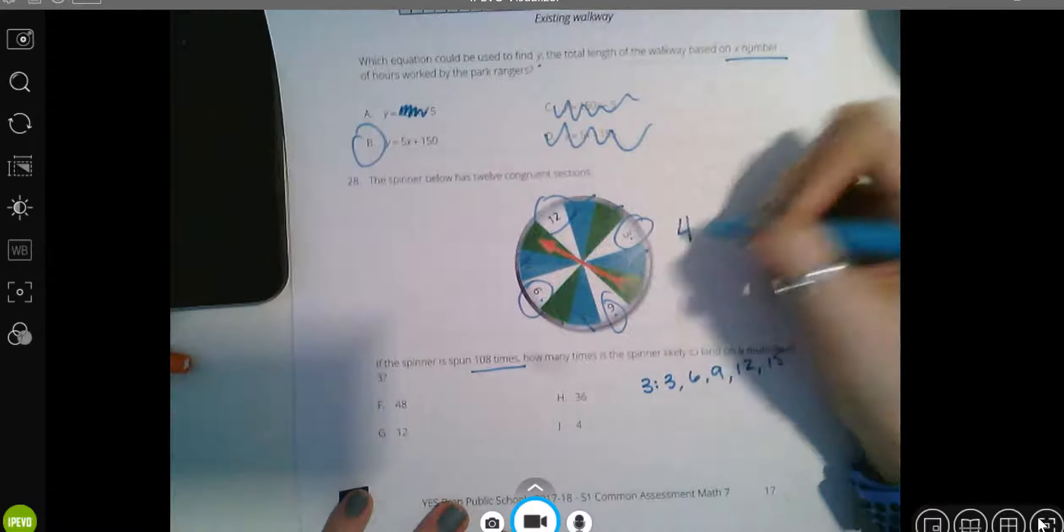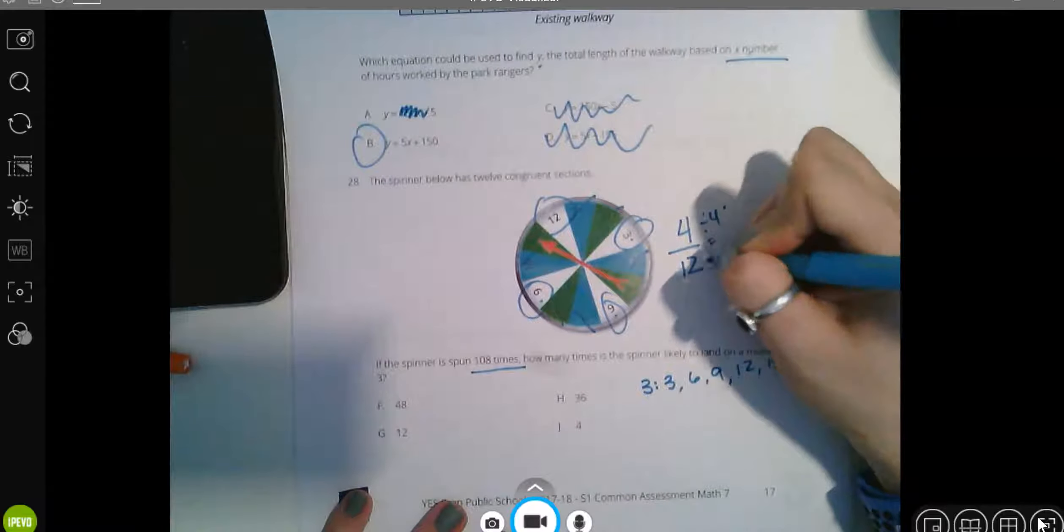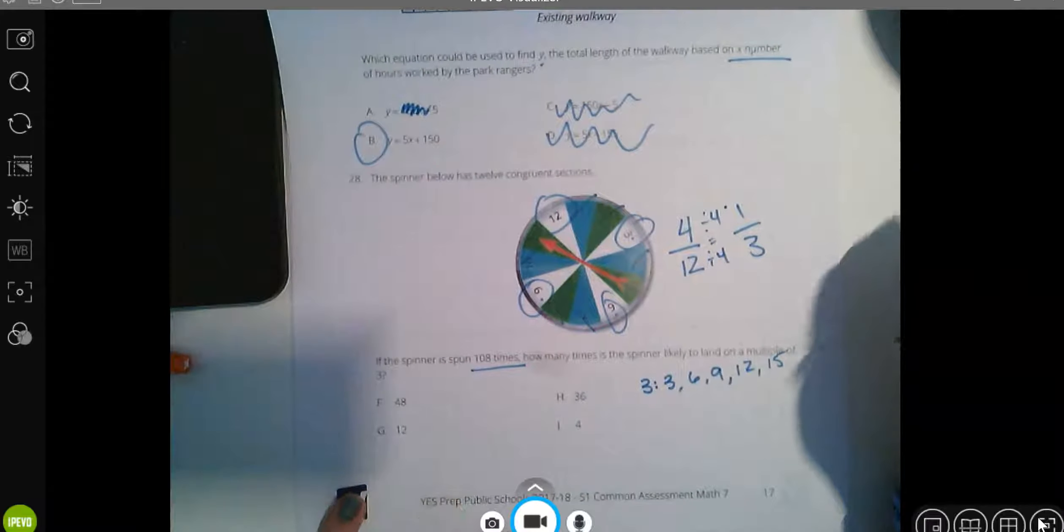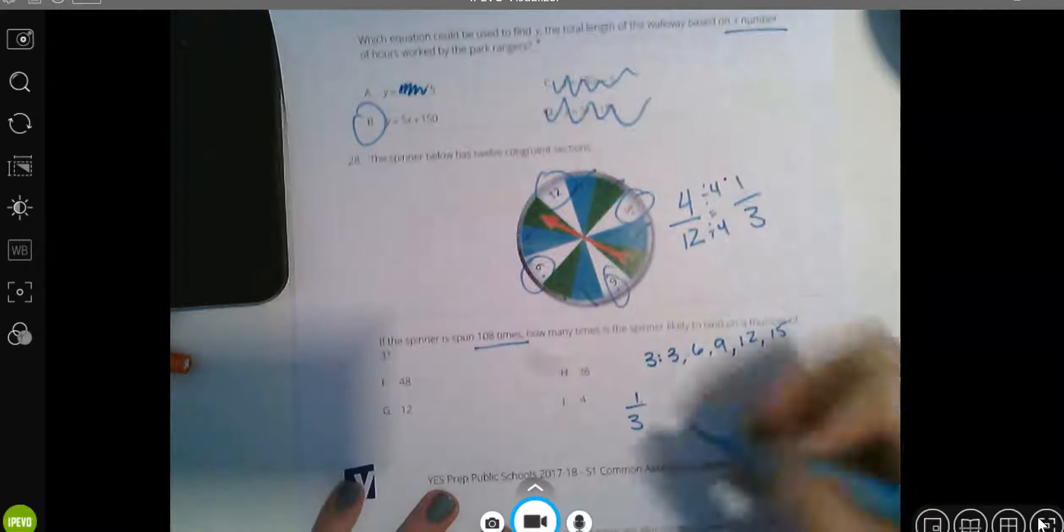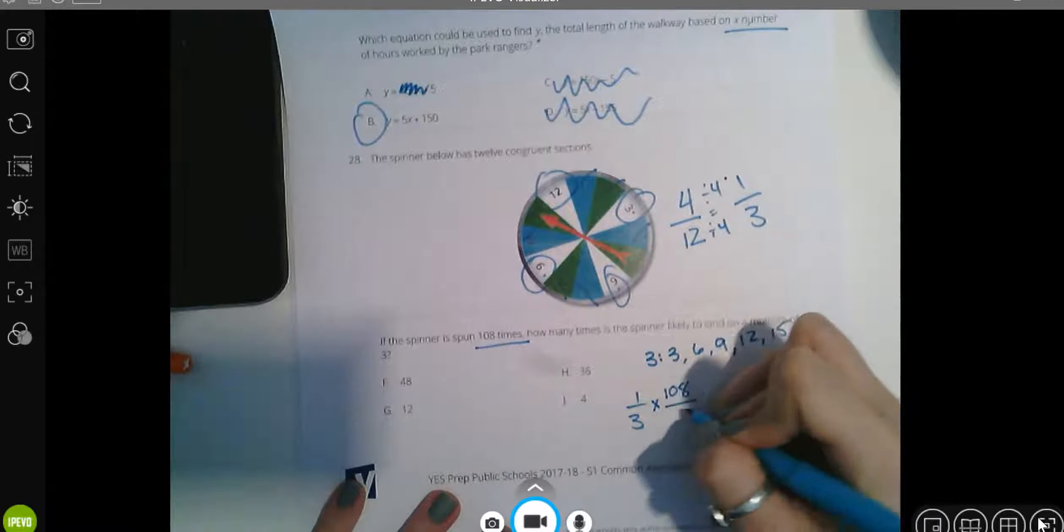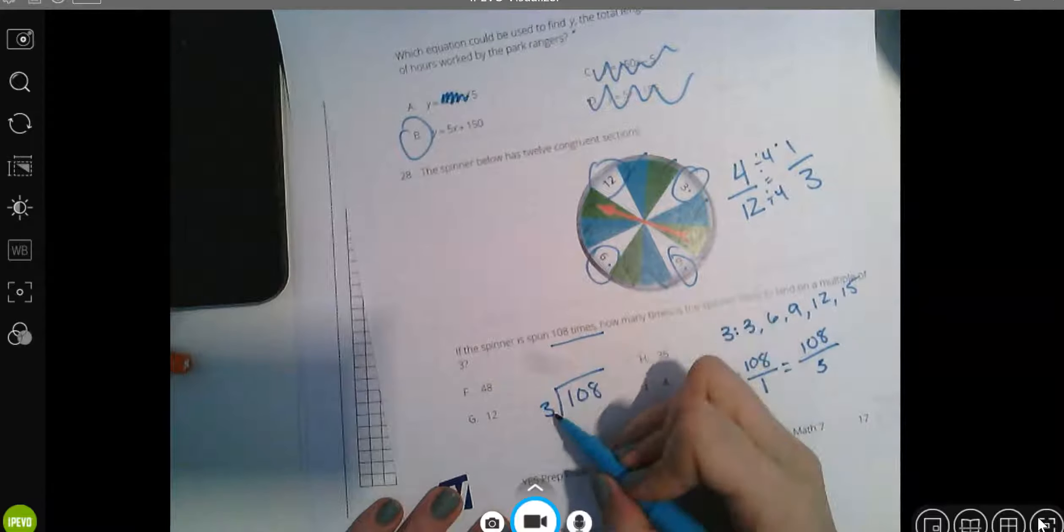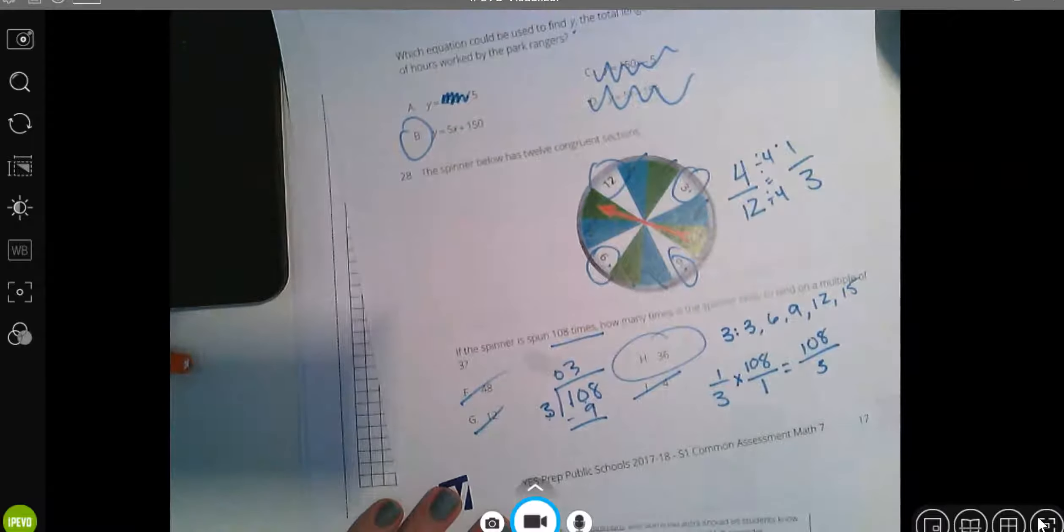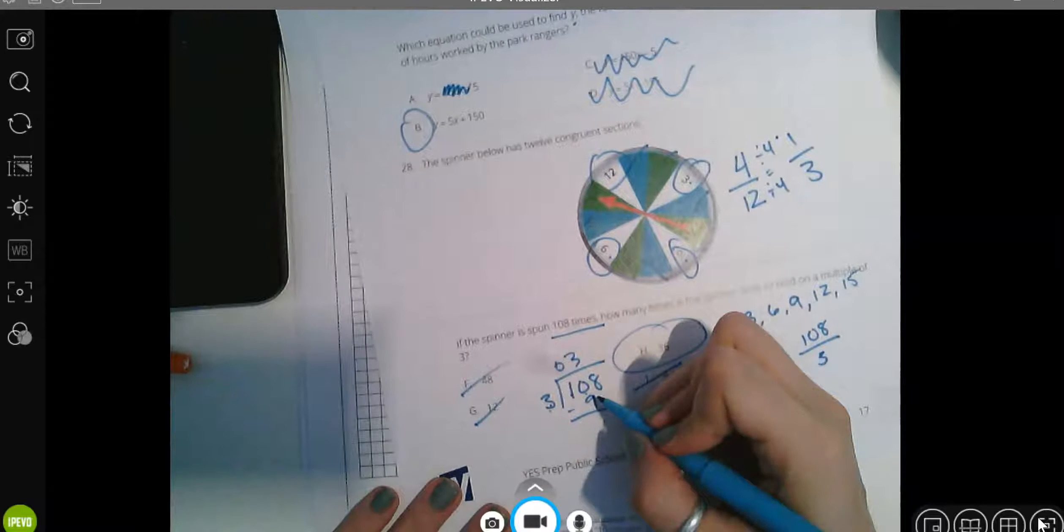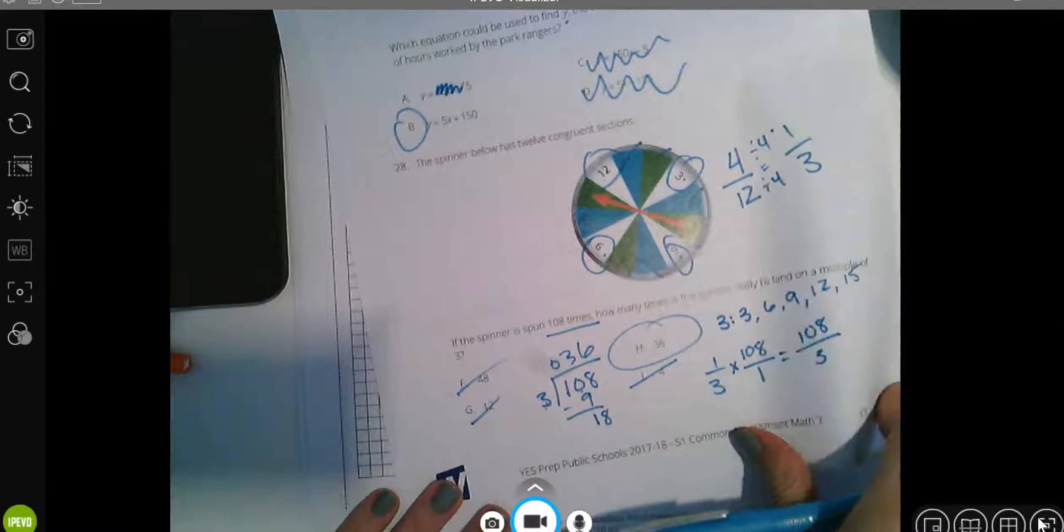It will help you to simplify now. That simplifies to one third. One third of the time it will land on a multiple of three. If I spin it 108 times, how many times will it actually land on a multiple of three? I'm going to multiply and then remember that this means division so I'm going to divide 108 divided by 3. It's going to be zero, three. Does anything start with a, oh look. Only one answer starts with a three. I'm still going to prove it to myself just because I don't want to make any silly mistakes. Three goes into 18, yep, six times. There you go. If you're running short on time, that's a helpful strategy to be like, oh, there's my answer.